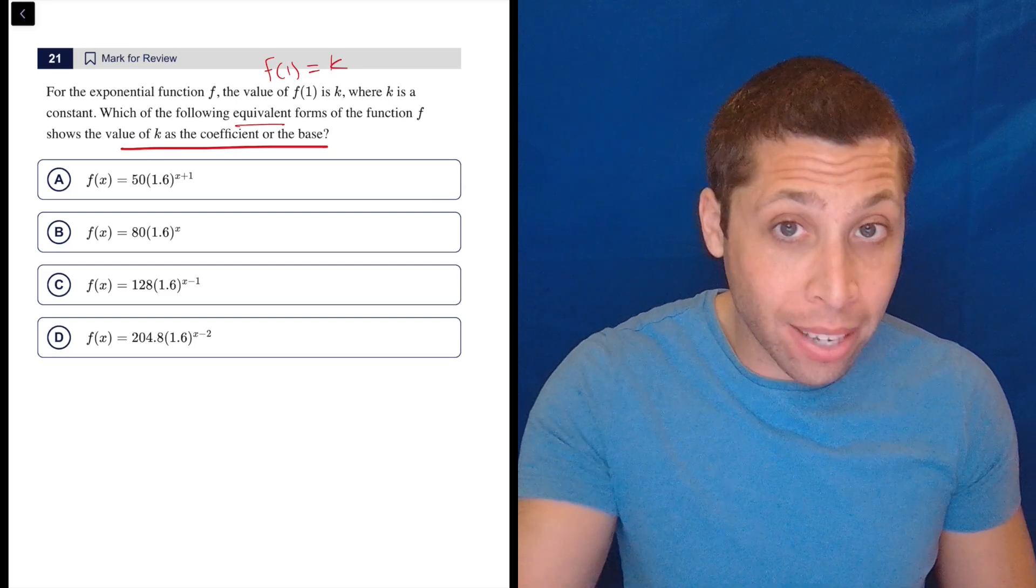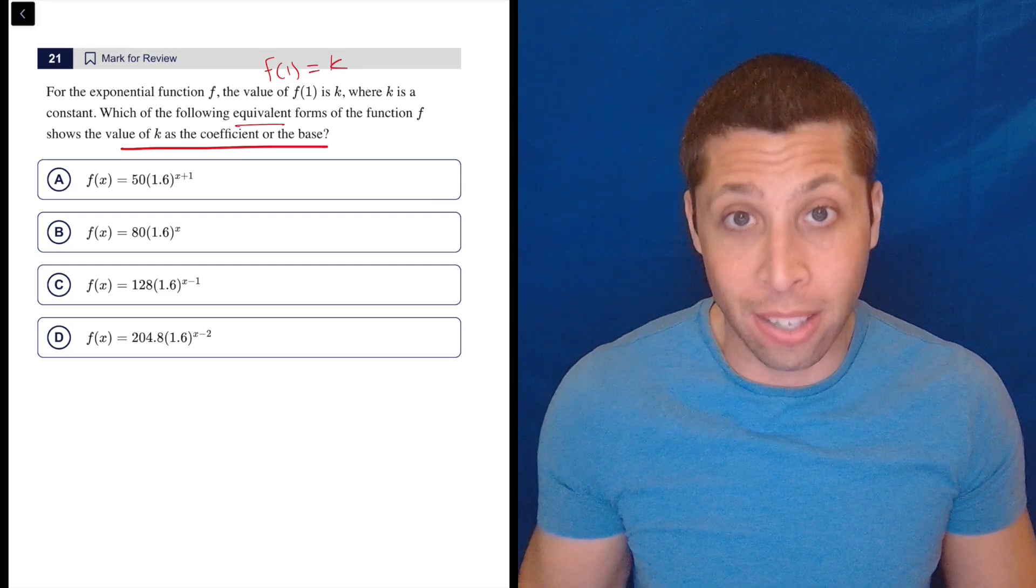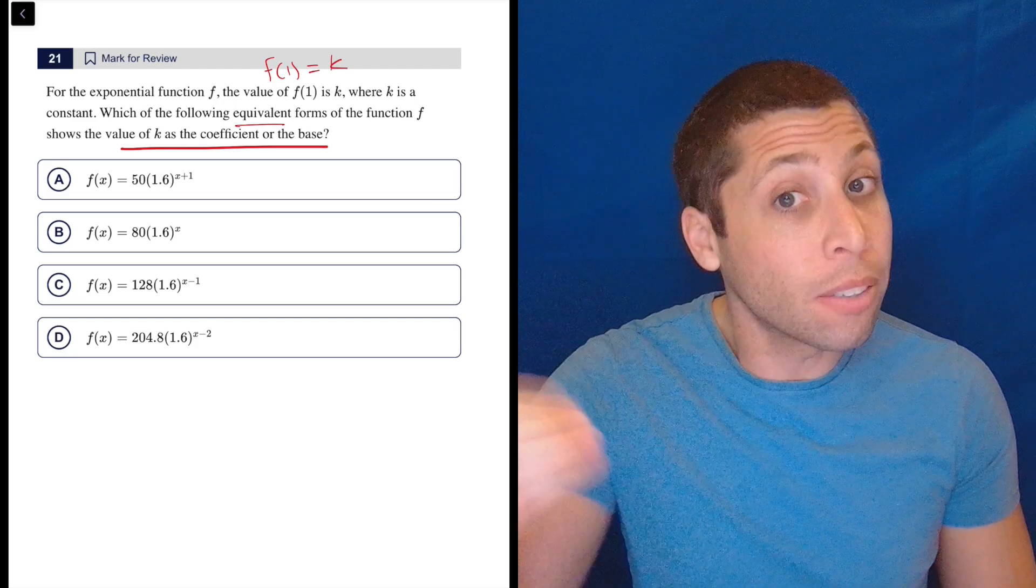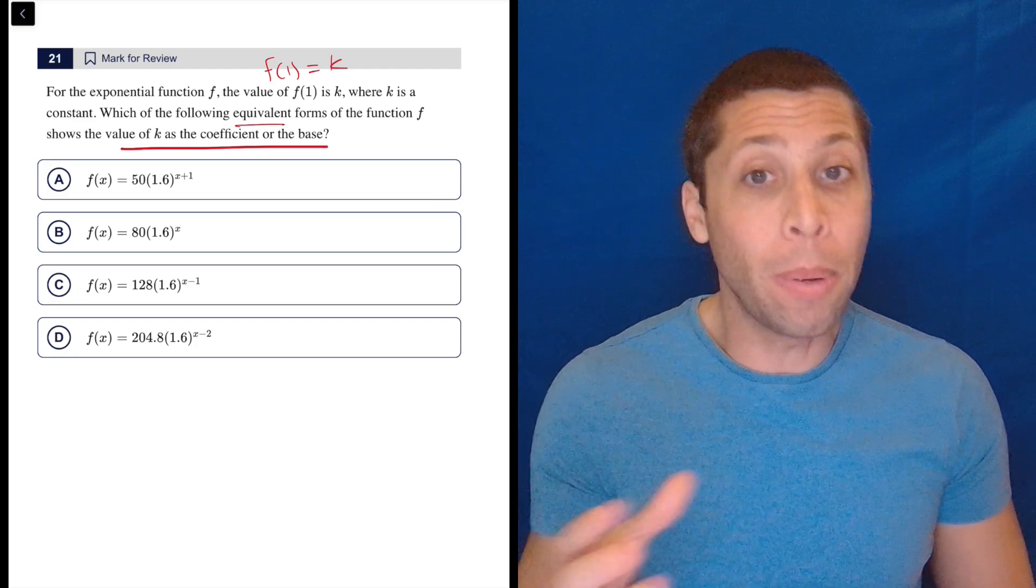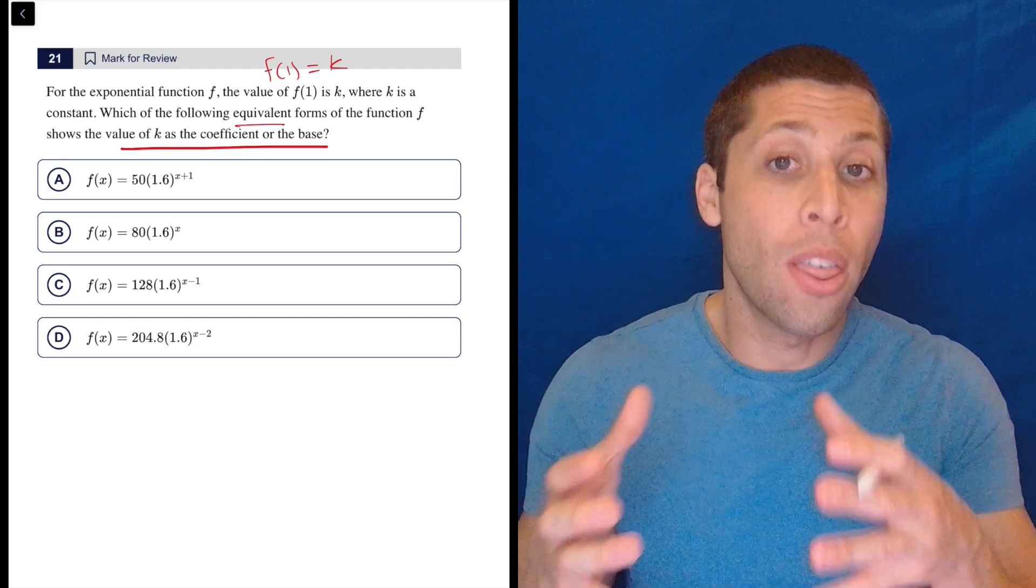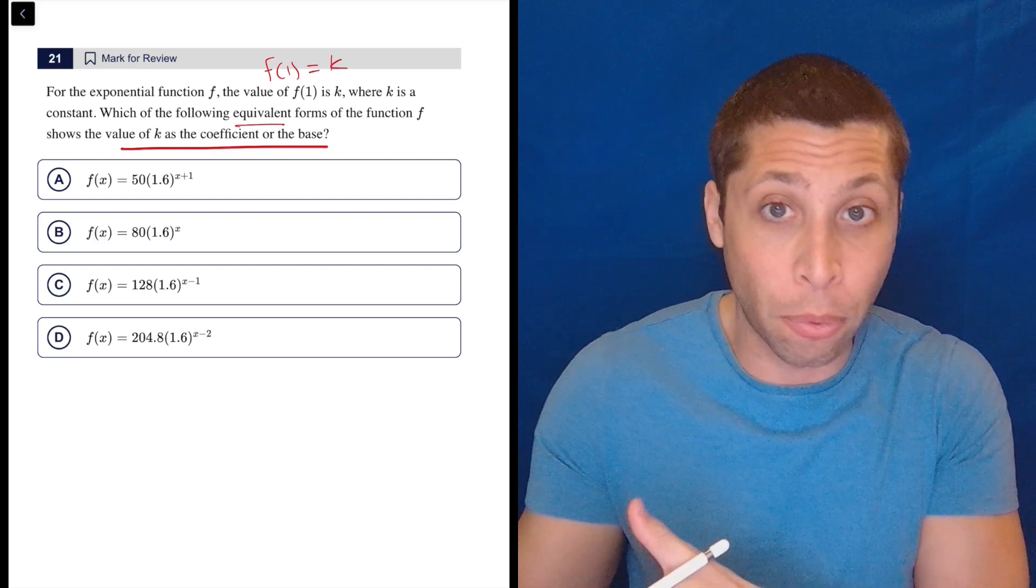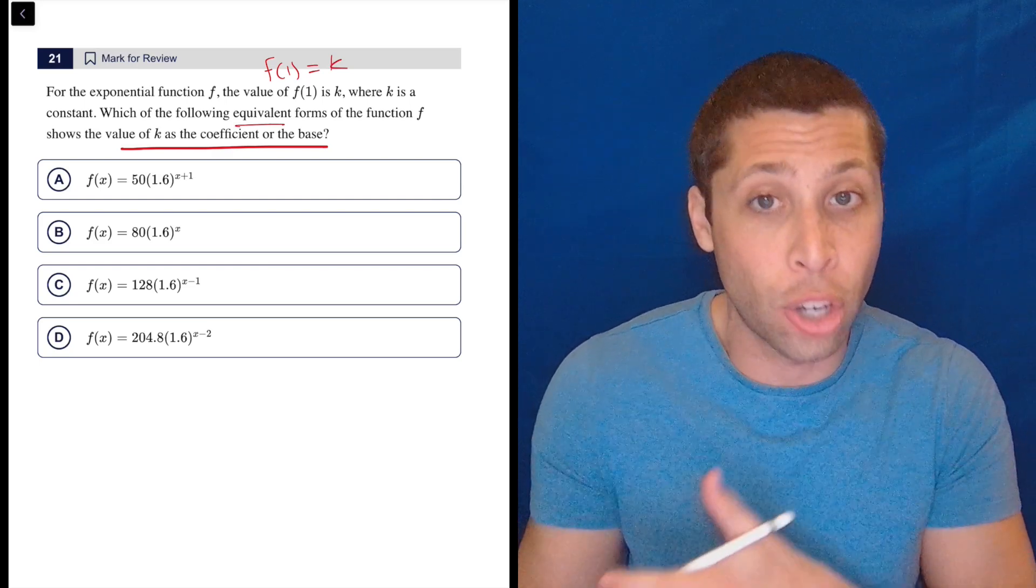Now, the x and the f of x in these equations, these are not constants. Those are variables. You can plug in lots of different numbers for x, but the other pieces, since they're already numbers, those are constant. It's going to be 50 the whole time if we're looking at choice A. That number 50 doesn't change.